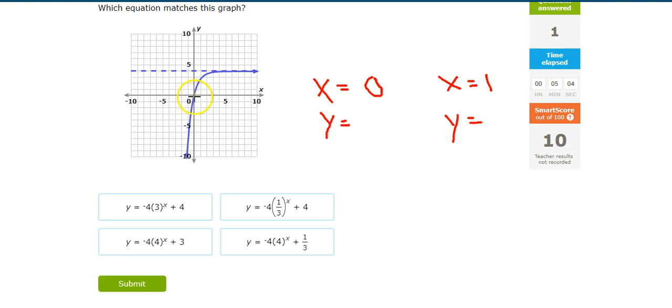So if I put in 0, a 0 needs to come out. Let's see. 3 to the 0 power is 1 times negative 4 is negative 4 plus... So this is an option right here. This one, if I plug in a 0, 1 third to the 0 power is 1 times negative 4 is negative 4 plus 4 is 0. That one works.